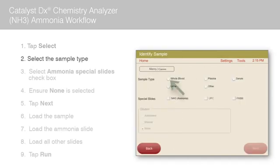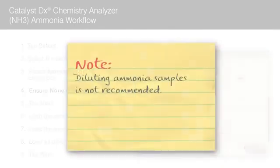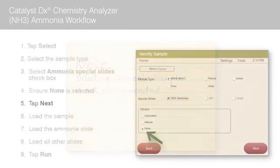Select the sample type. Select the ammonia special slides checkbox. Under Dilution, ensure None is selected. None is the default dilution option. Note: diluting ammonia samples is not recommended.